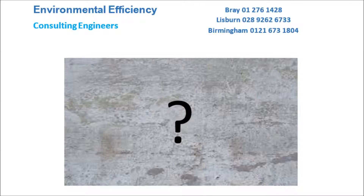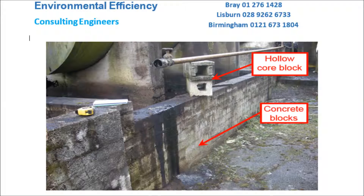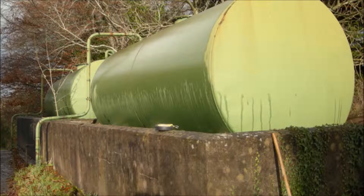So, how can you tell the difference between reinforced mass concrete bonds and block bonds? Reinforced mass concrete bonds tend to have a smooth surface and there is usually evidence showing where the shuttering was in position. With block bonds, the individual blocks are sometimes visible, or the blocks may be covered with a render of concrete, in which case the surface of the render will be rough.